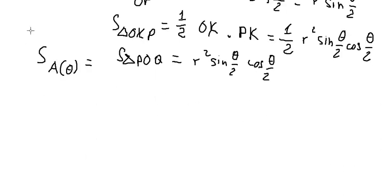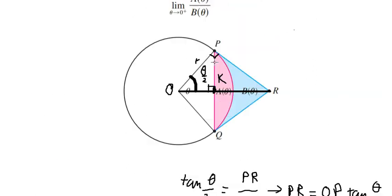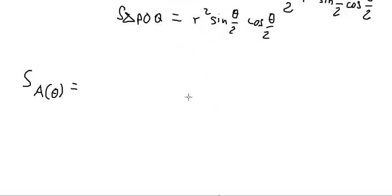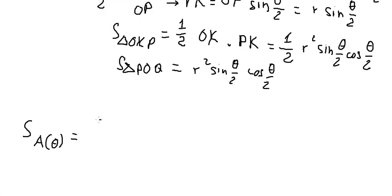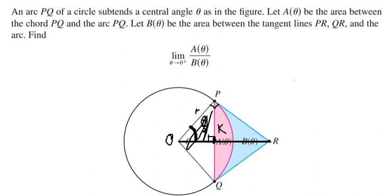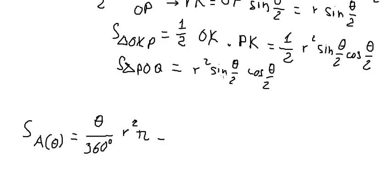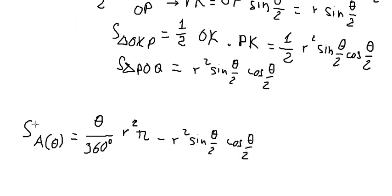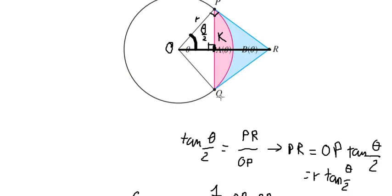Now we can find the area of the circle sector. We have (theta / 360°) multiplied by R², giving us the sector area that includes the white triangle. So we need to subtract the white triangle from it. That gives us Hb(theta).